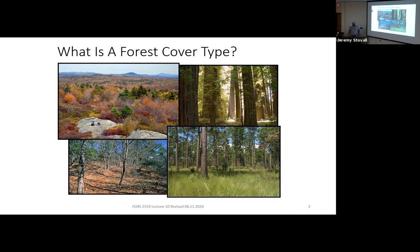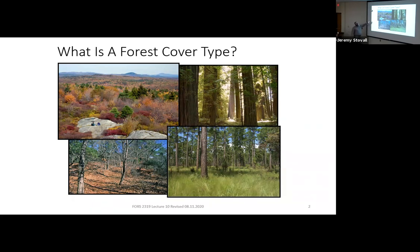Some of you have probably been to some of these areas. Right now if you went up into the northeastern United States, you know, it's actually fall, so you might be seeing some fall color there. This is what we call a hemlock northern hardwood cover type, where you'll have eastern hemlock and then a number of different hardwood species — various oaks, some maples. And so that's that one.